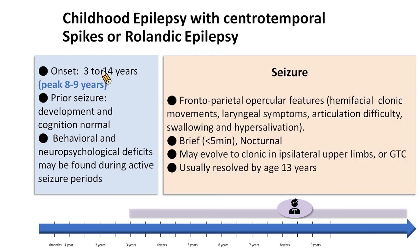The mandatory seizures involve frontal, parietal, or opercular features, with hemifacial including lip, mouth, and tongue clonic movements, laryngeal symptoms, articulation difficulty, swallowing, and hypersalivation. Seizures are typically brief and occur nocturnally. The seizures may involve clonic activity in the ipsilateral upper limbs or evolve to focal to bilateral tonic-clonic seizures. Seizures usually resolve by adolescence.